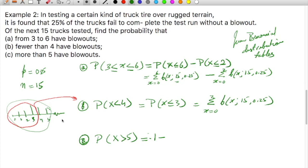So it will be 1 minus the probability of getting X less than or equal to 5. That I may write as 1 minus summation X equals 0 to 5, B(X; 15, 0.25). Now these values we will have to see from the table of binomial distribution.